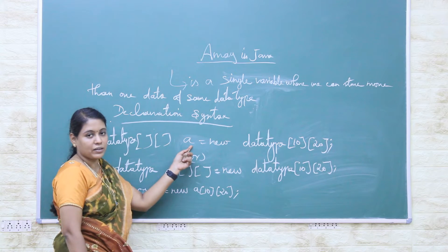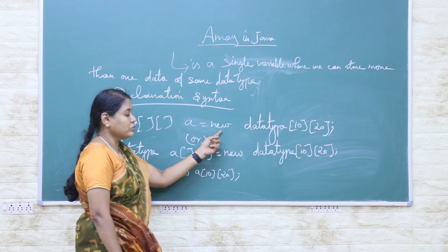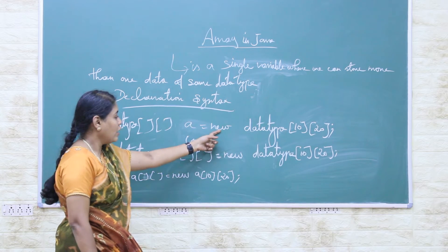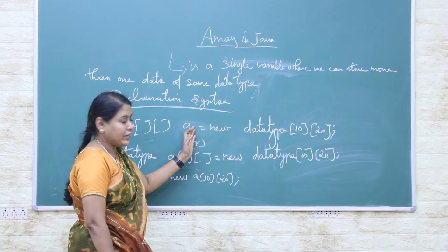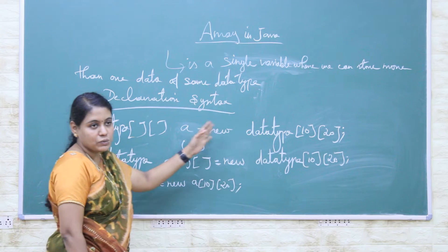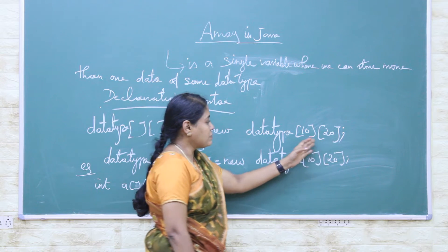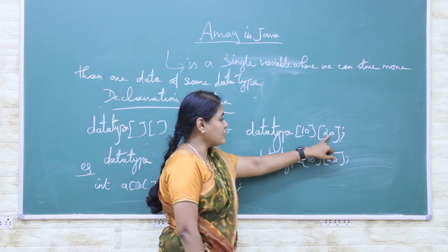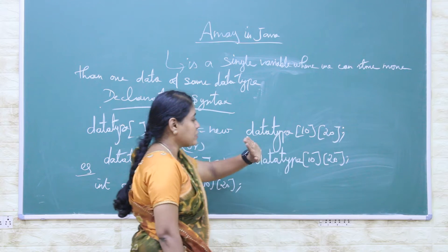Here 'A' is the variable name — we may use any name as a variable. We use the keyword 'new', which is used to allocate memory for that variable based on the data type stored in it. The data type specifies what kind of data is stored in the variable. One subscript represents the data row-wise and the second subscript represents the data column-wise, so we use two subscripts.